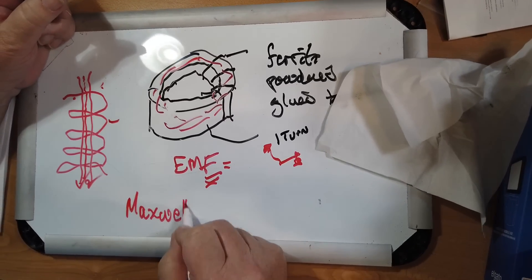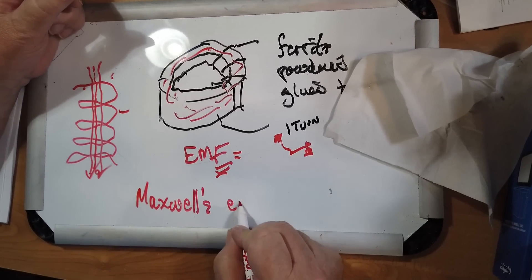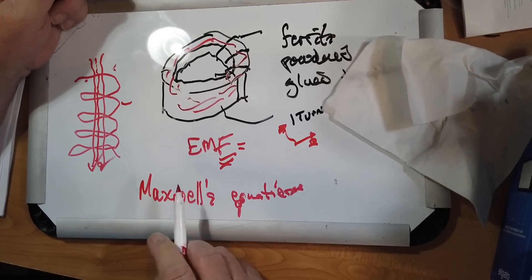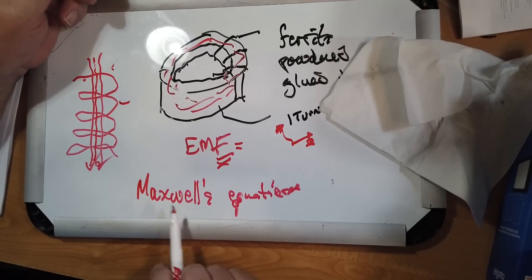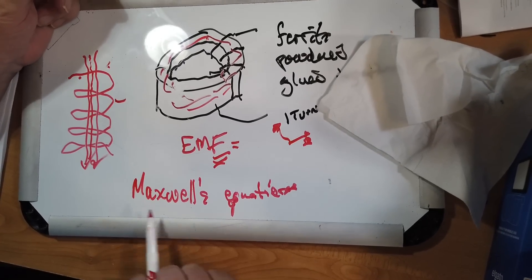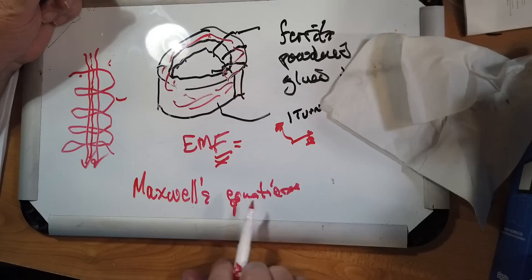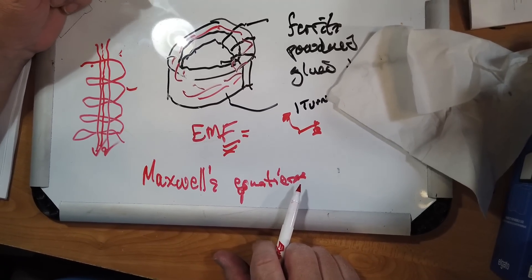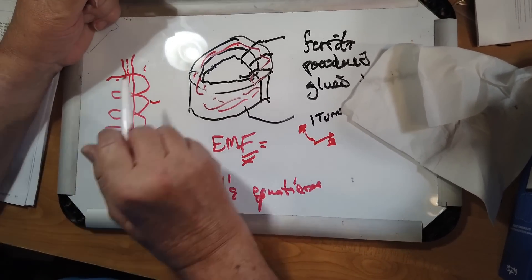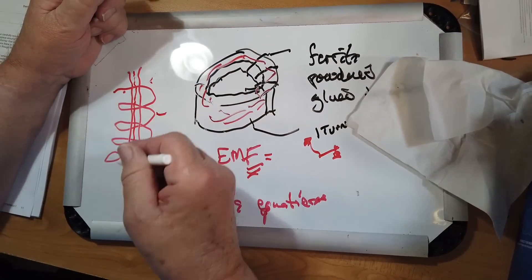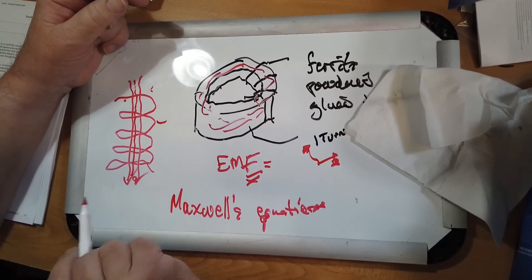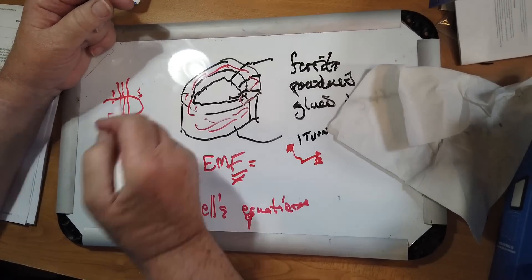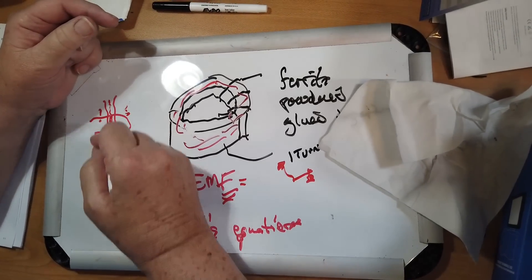Maxwell's equations, there are four of them. Actually, Heaviside was the one who reduced Maxwell's equations to four equations using operational calculus. So, yes, there is a magnetic field. It does not matter that the magnetic field is not here or not here. It is here.